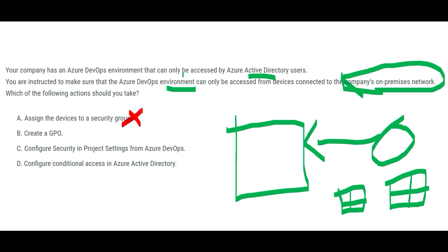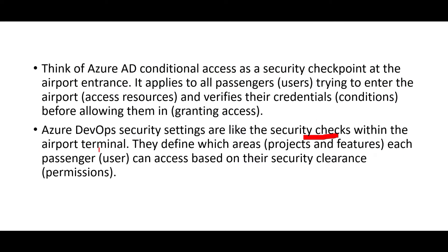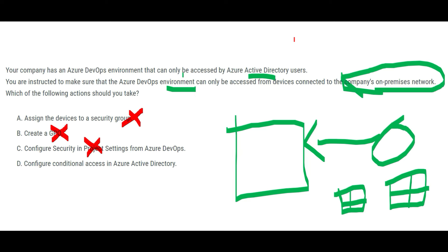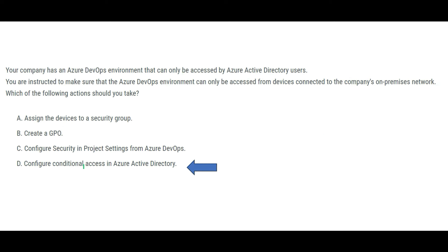The security group can do a portion of the job but not fully, and GPO is not correct in this case. Configuring security in project settings in DevOps is like a security check within the airport terminal, but conditional access is at the airport entrance — it applies to all passengers trying to enter. DevOps security settings define specific project areas with granular clearance, while conditional access is high-level at the gate itself. So our answer is to configure conditional access.